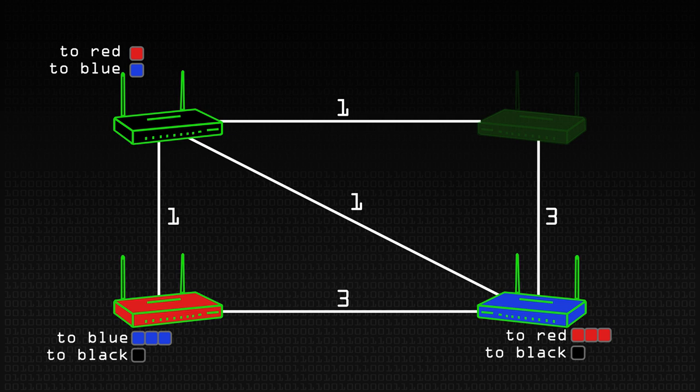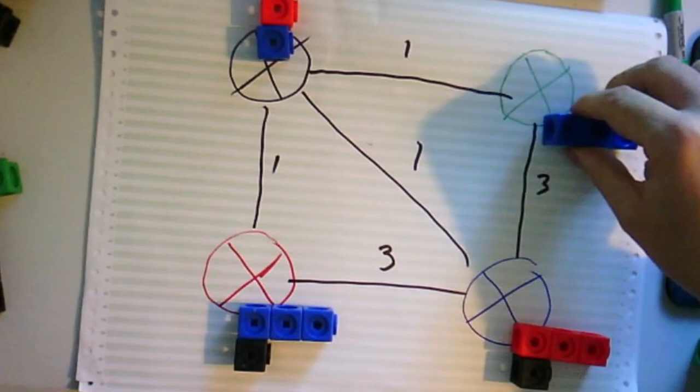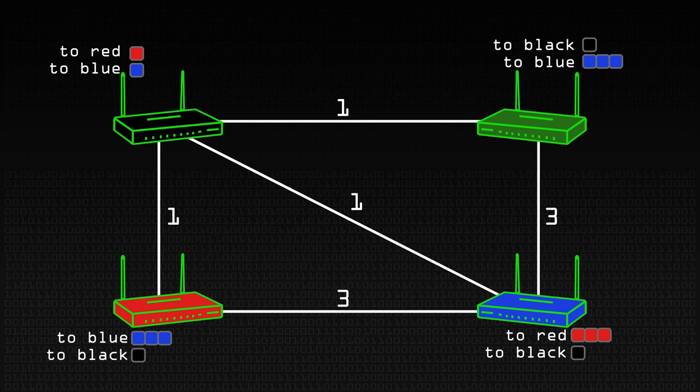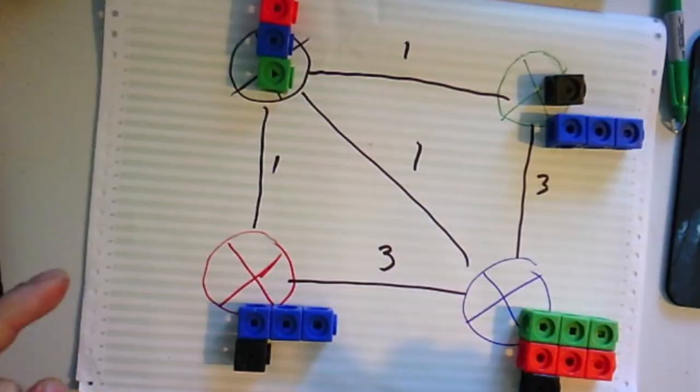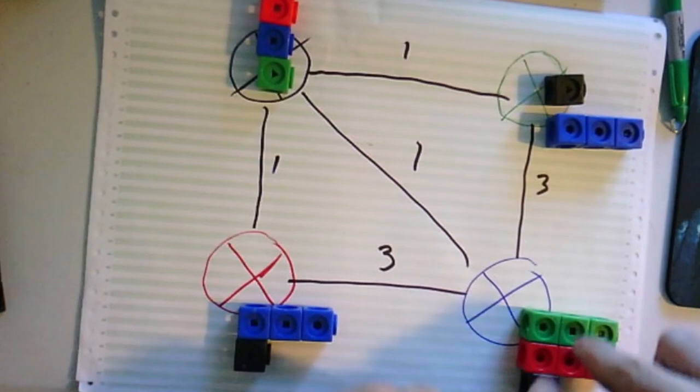Now we're going to switch on green. Green can see blue at a cost of three, and green can see black at a cost of one. Blue can see green at a cost of three, and black can see green at a cost of one. So green can see its two neighbours, red can see its two neighbours, blue can see its three neighbours, and black can see its three neighbours.